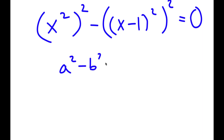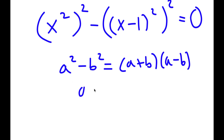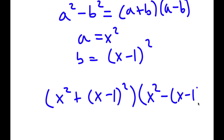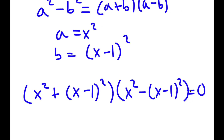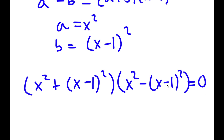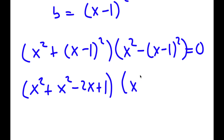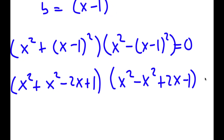Using the difference of squares — a squared minus b squared equals a plus b times a minus b — where a is x squared and b is x minus 1 squared, I get x squared plus x minus 1 squared, times x squared minus x minus 1 squared, equals 0. Expanding x minus 1 squared gives x squared minus 2x plus 1, so the second factor becomes x squared minus x squared plus 2x minus 1, distributing the negative sign.